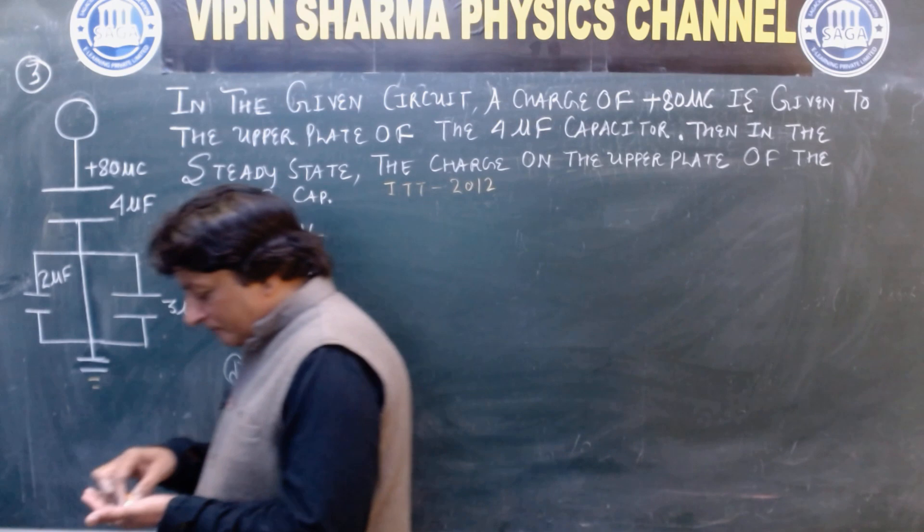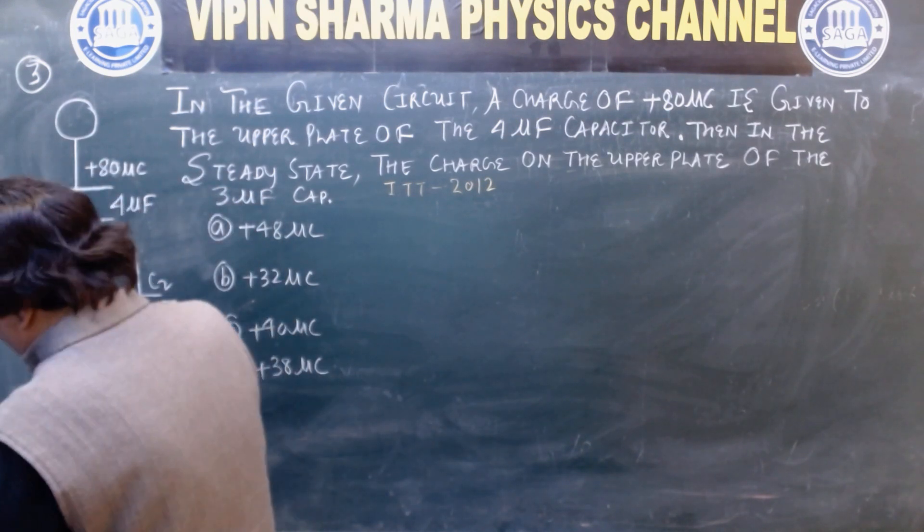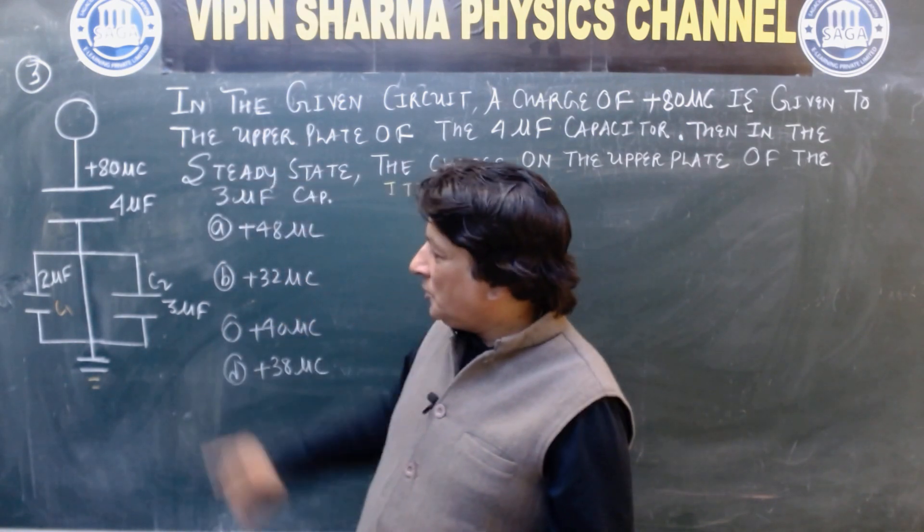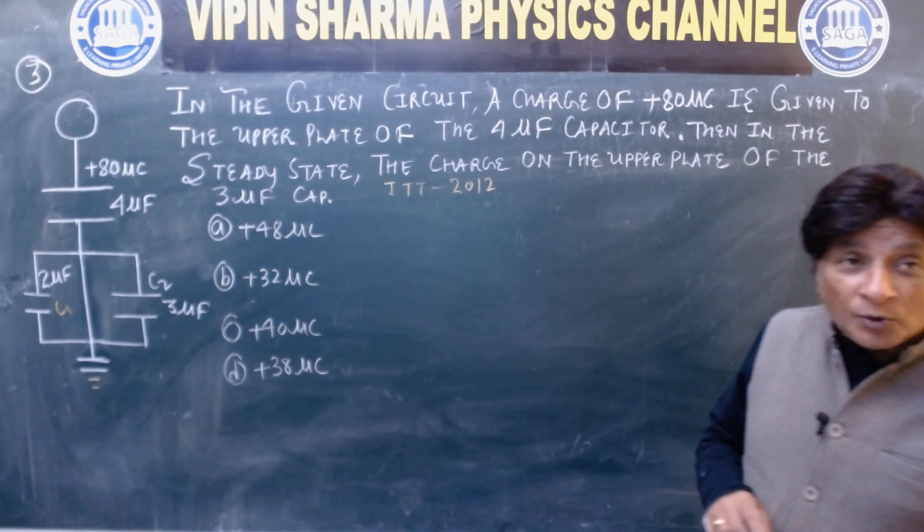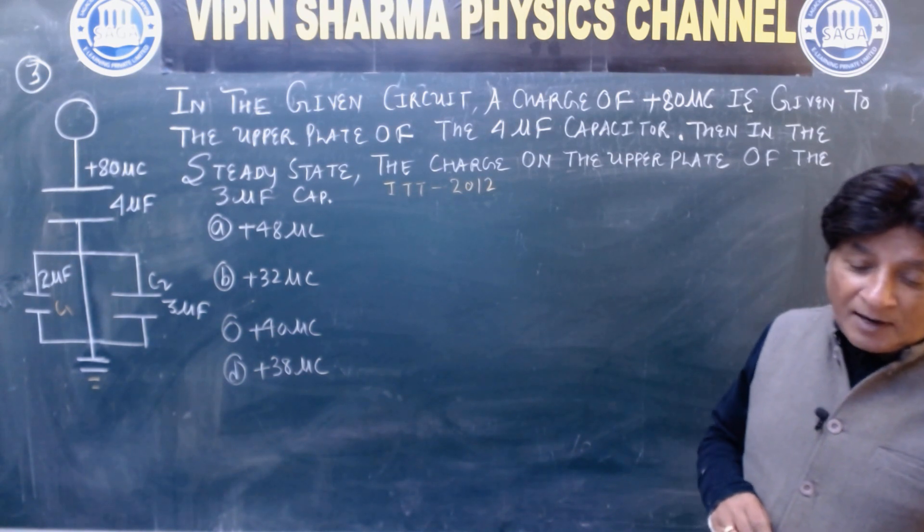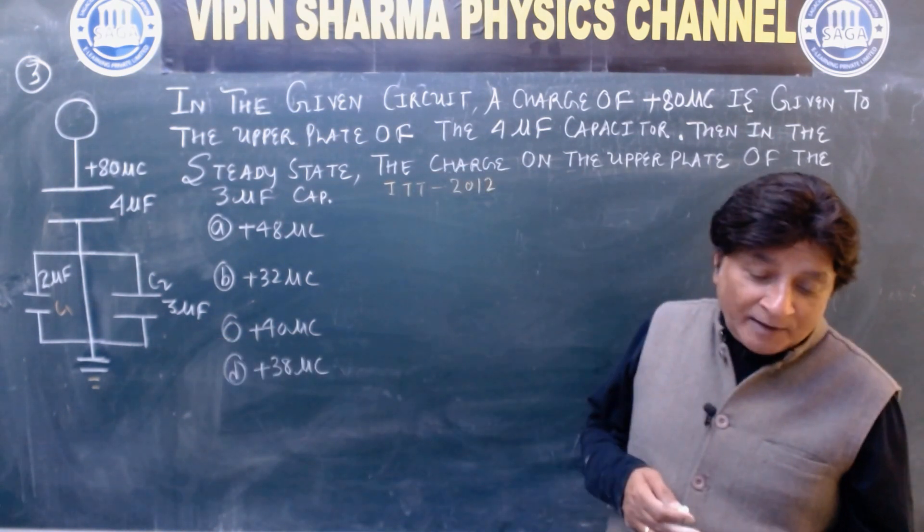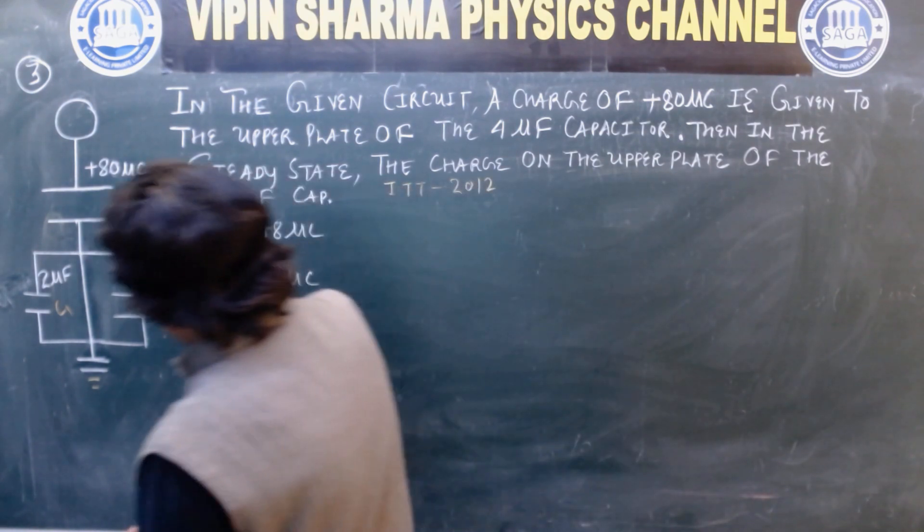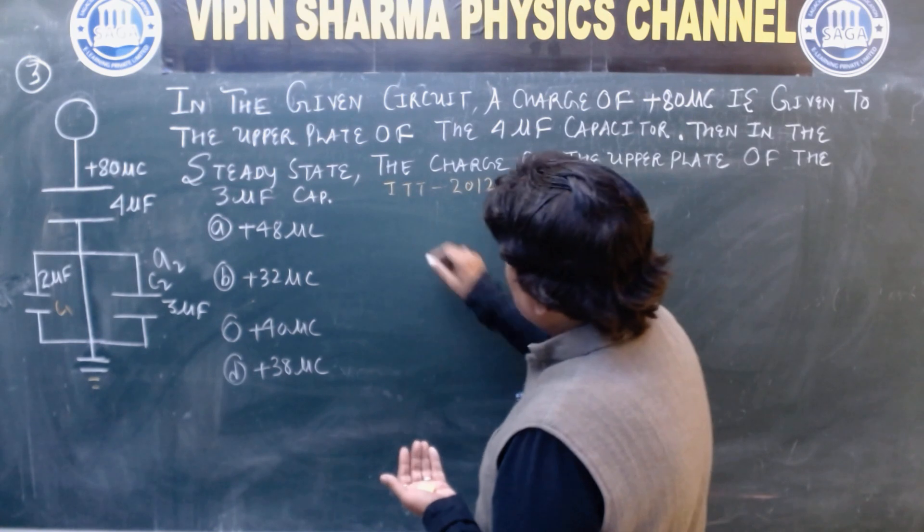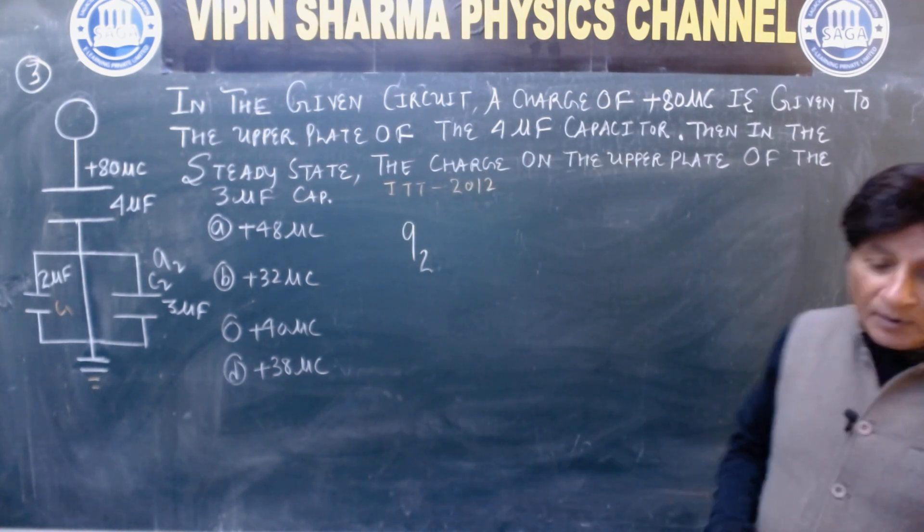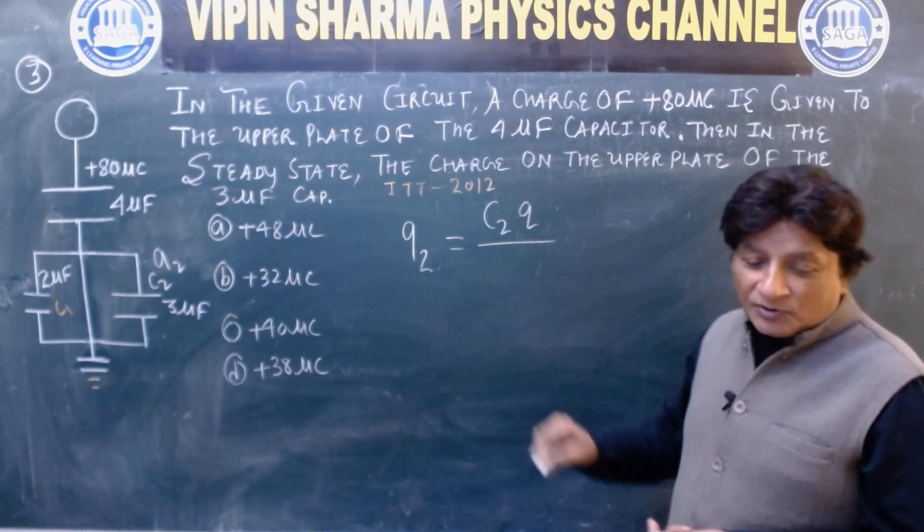You must have tried this. Now I'll give you a technique. First we call this C1, this is C2. This 2 microfarad capacitor, this is C1, and this is C2. We have to find the charge on which? We have to find charge on C2. Let it be charge Q2. 2 stands for C2. So what's the shortcut technique? Q2 equals C2 into Q upon C1 plus C2.